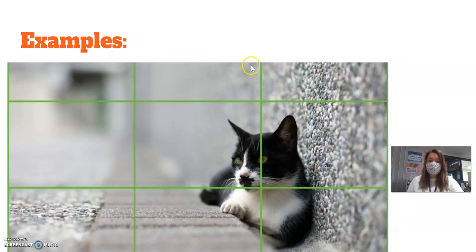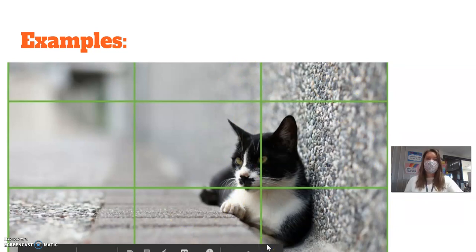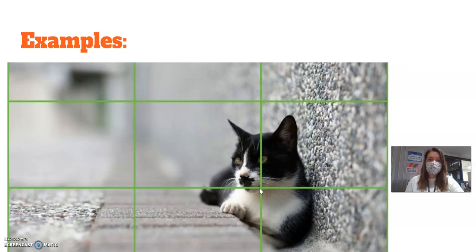Here's another example. The cat is on this line. It's not way over to the side or the top or the bottom. It's kind of right on the third of the page. And the center of his body or her body is right in the middle of that intersecting point.